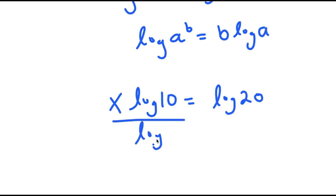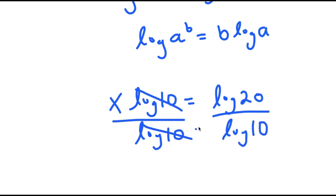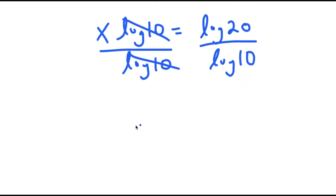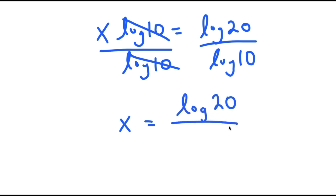From here, I'm going to divide both sides by log 10. These two cancel out, and I get x is equal to log 20 over log 10.